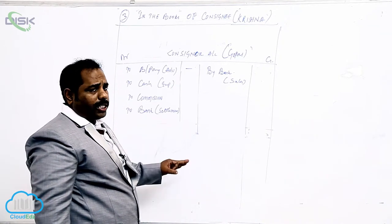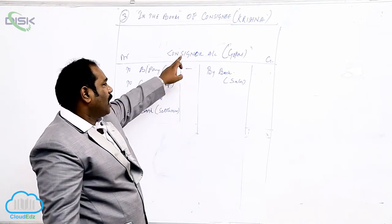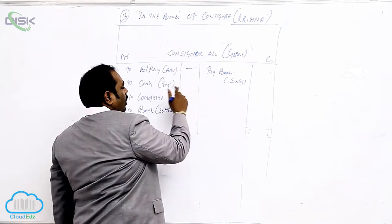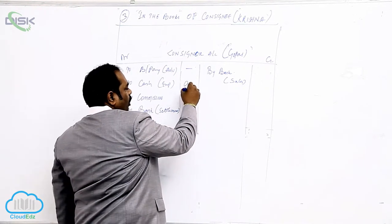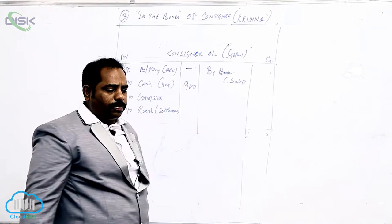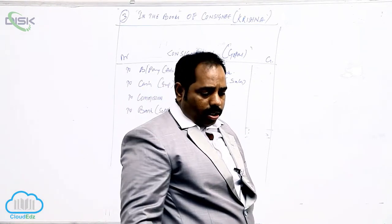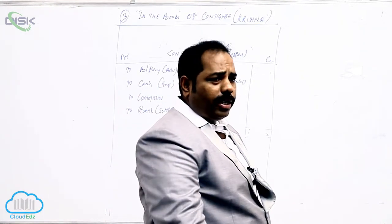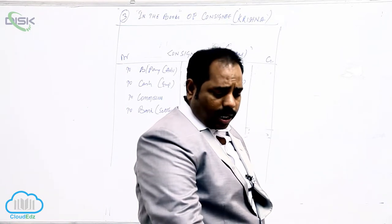When the consignee pays expense, the consigner has to reimburse. So consigner becomes debtor: consigner account debit to cash. The amount is Rs.900 for expenses made by consignee. Why are we debiting consigner? Because the consigner has to give us. Consigner becomes debtor.